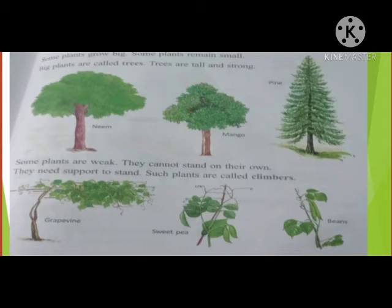Grape vine — देखो grape vine होता है न, जहाँ पर grapes निकलते हैं उसको grape vine बोलते हैं. Second is sweet pea, and third is beans. देखो जो pea है, sweet pea है, beans — इन सबको support की ज़रूरत होती है और इनको climbers बोलते हैं.